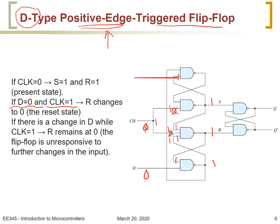When R changes to 0, the flip-flop responds accordingly and Q becomes 0. To summarize: if the clock is 0, S will be 1 and R will be 1. When D is 0 and the clock goes from 0 to 1, R will change and the flip-flop will be reset. Hence, Q gets the value 0 only at the positive edge of the clock.